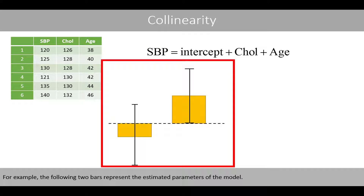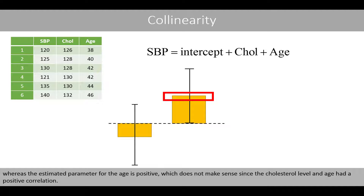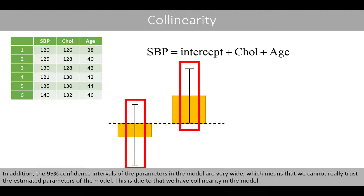For example, the following two bars represent the estimated parameters of the model. We see that the estimated parameter associated with the cholesterol level is negative, whereas the estimated parameter for age is positive, which does not make sense since the cholesterol level and age had a positive correlation. In addition, the 95% confidence intervals of the parameters in the model are very wide, which means that we cannot really trust the estimated parameters. This is due to collinearity in the model.